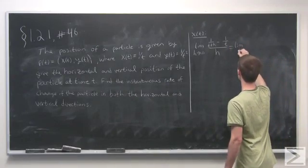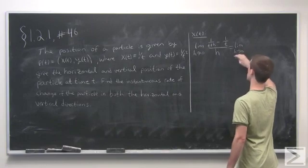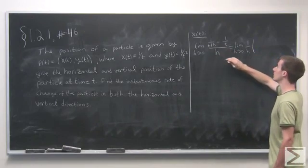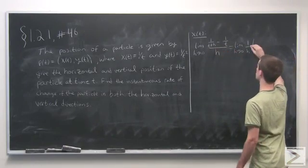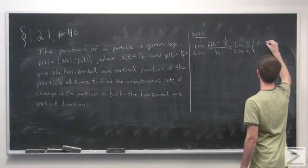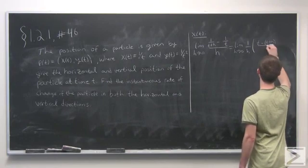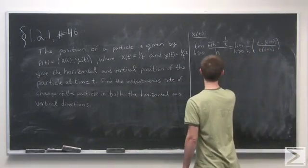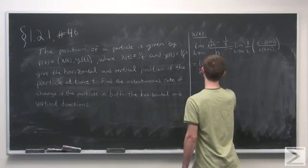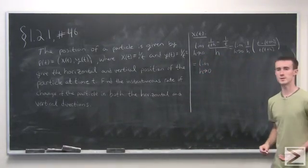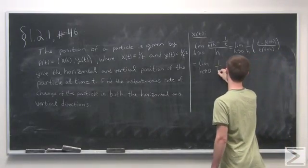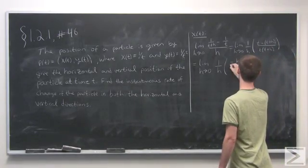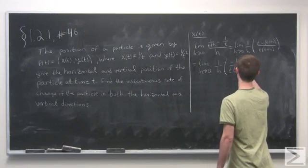Simplifying, we take the limit as h goes to 0, factor out 1 over h from the denominator, and simplify the numerator. We end up with 1 over h times t minus the quantity t plus h, all over t times t plus h. We can see that t minus t cancels out, leaving just a minus h in the numerator over t times t plus h.